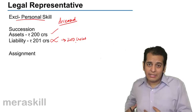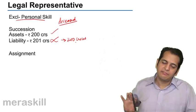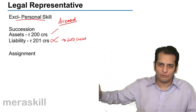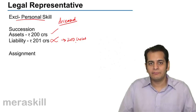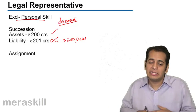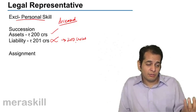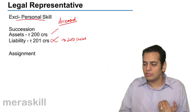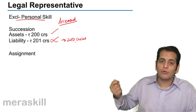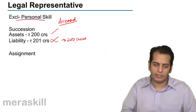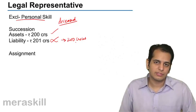The legal heir will get 200 crores on one hand and he will pay the liabilities of 200 crores on the other hand. So for him, net net, it would be a zero sum game. He will be left with nothing. But there cannot be a case wherein he gets 200 crores and he pays 201 crores, that means he will have to pay 1 crore out of his own pocket.